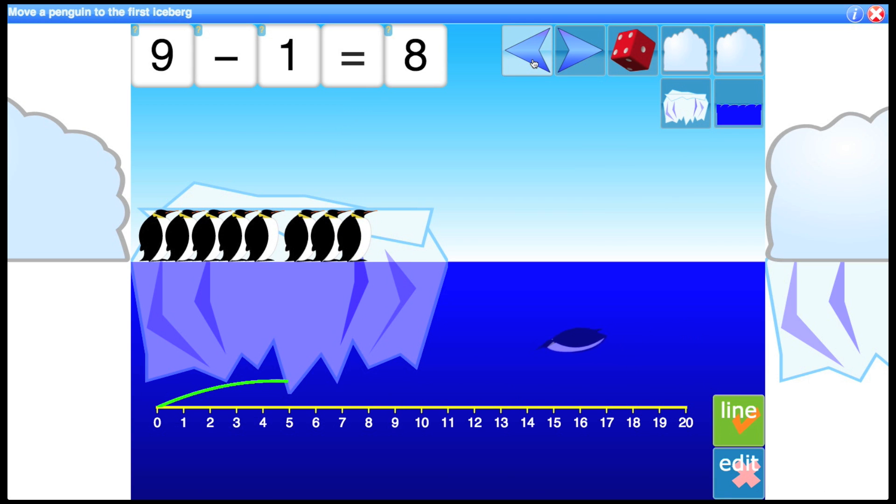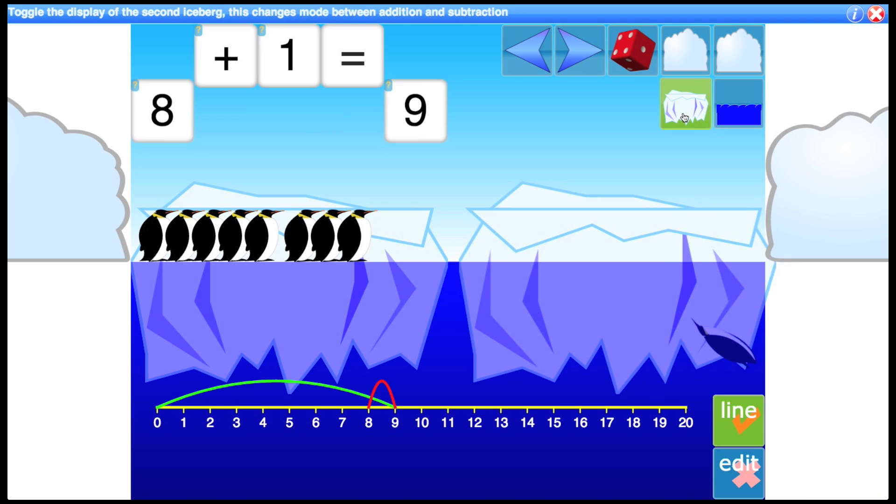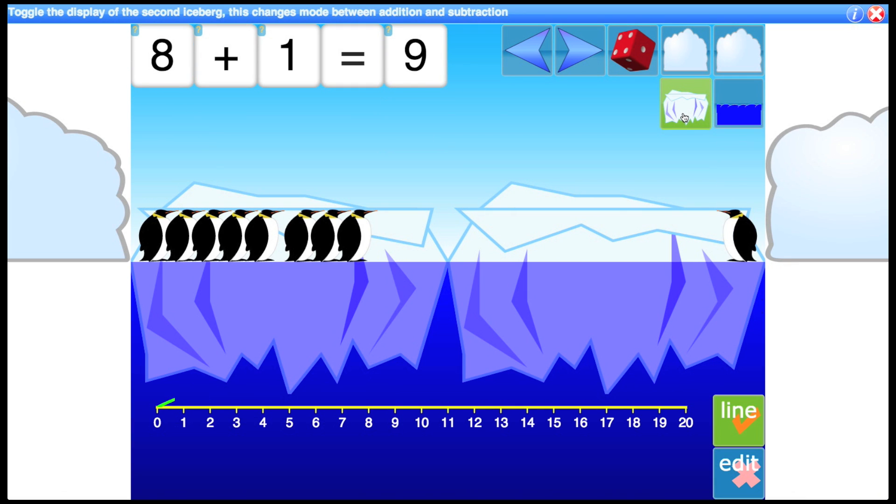And of course this will also work with addition facts. So if I bring the iceberg back in, the penguin jumps onto the second iceberg and now we see a different representation which is 8 on the first iceberg plus 1 on the second gives us 9. So you'd normally start with addition obviously before the subtraction facts.